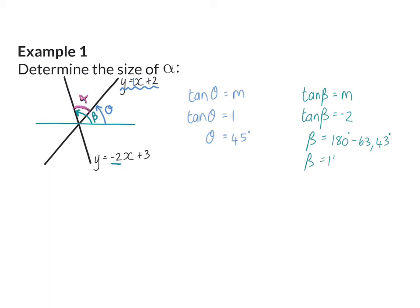And then to finally calculate alpha, I need to write down that alpha will be beta minus theta, and that means it is 116.57 minus 45 degrees. So alpha is 71.57 degrees.